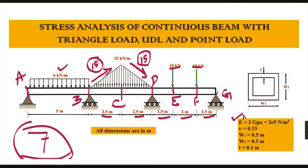The distance between F and G is 1.5 meters. The extra input parameters we are going to provide in ANSYS are Young's modulus value and Poisson's ratio value. With the help of these parameters we can model the continuous beam with the three different types of loads using ANSYS. Let me move on to ANSYS.